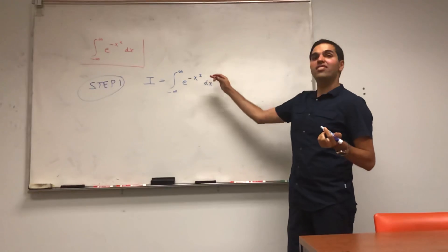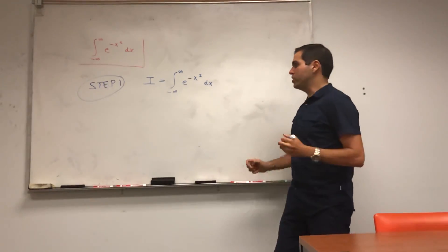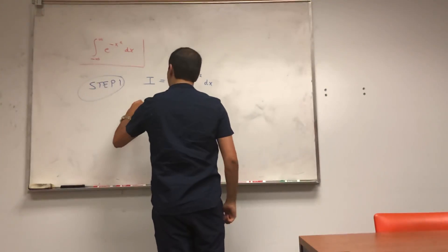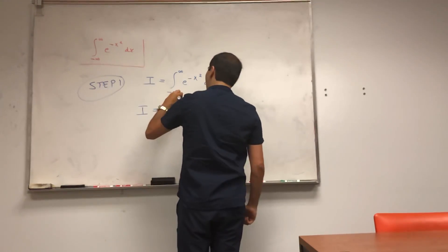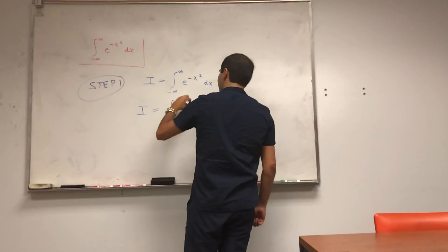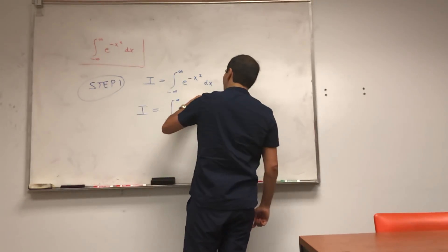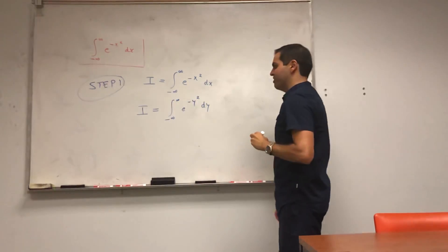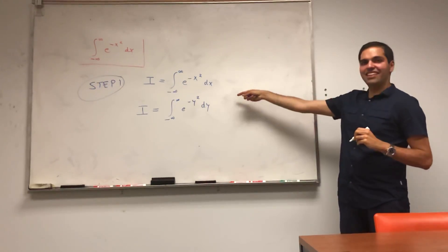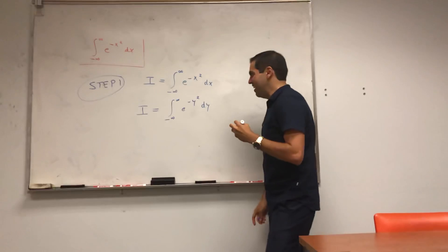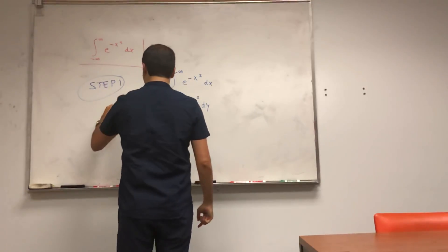Notice it doesn't matter which variable name we use, so we also have, indeed, that I is the integral from -∞ to ∞ of e^(-y²)dy. And now the nice thing is we can multiply them out.